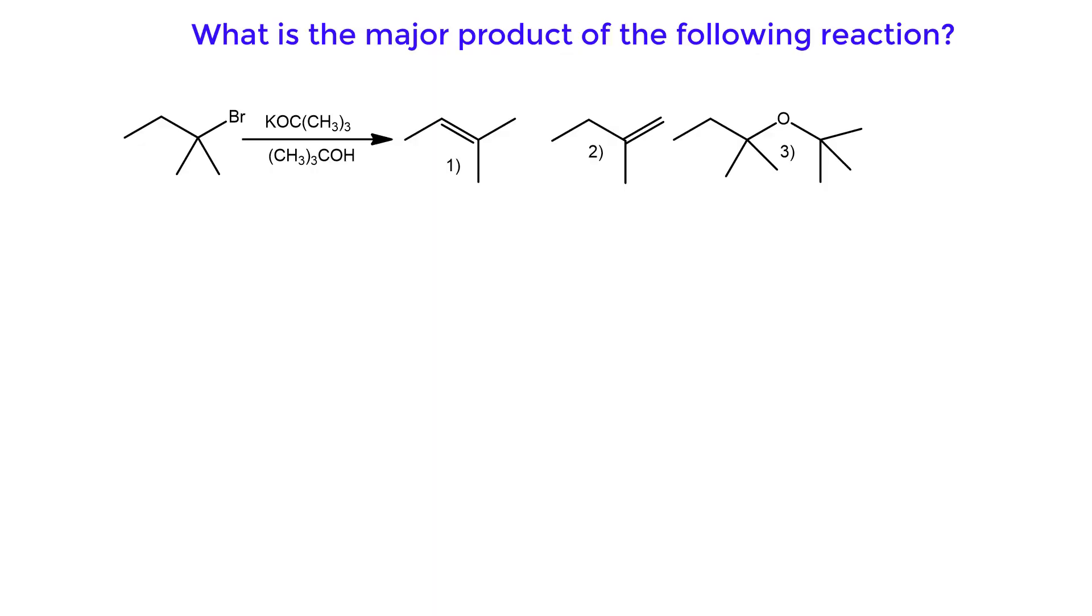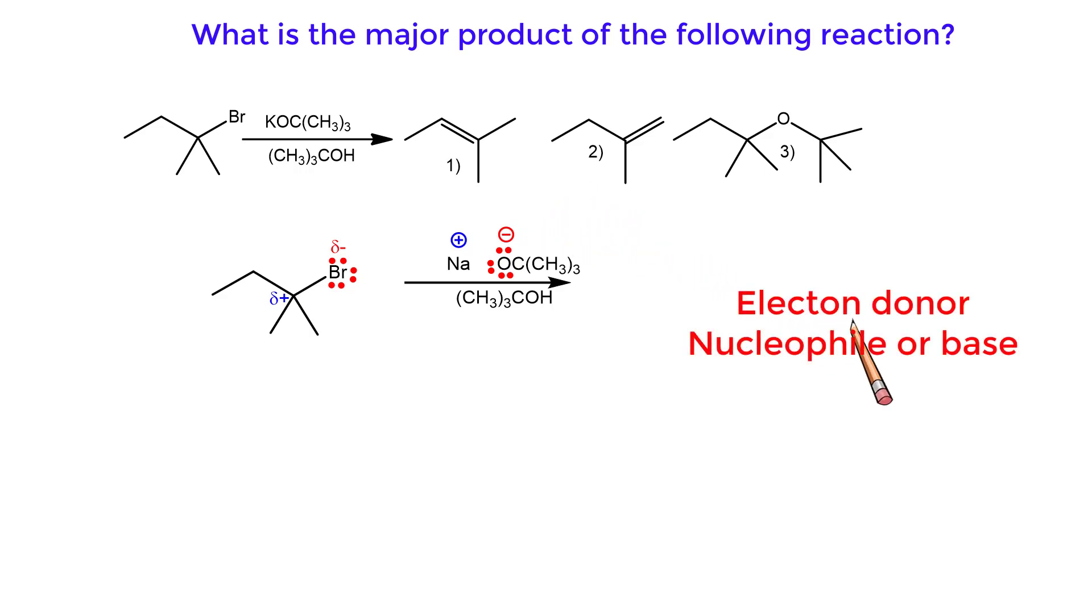What is the major product of the following reaction? The negatively charged oxygen compound, tertiary butoxide, is the electron donor and is either a nucleophile or base.